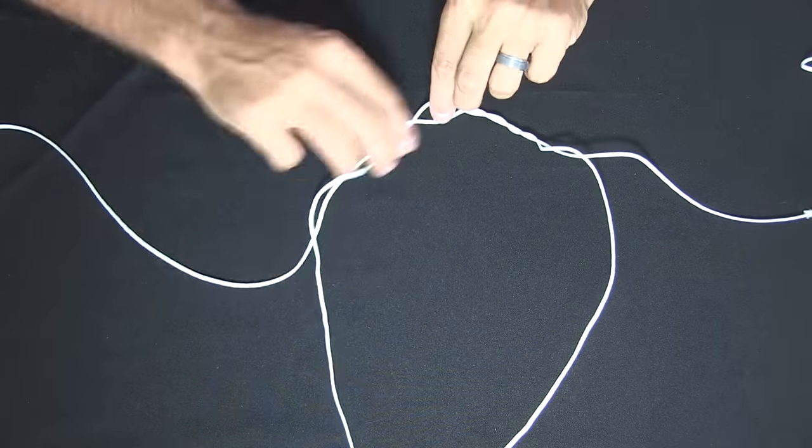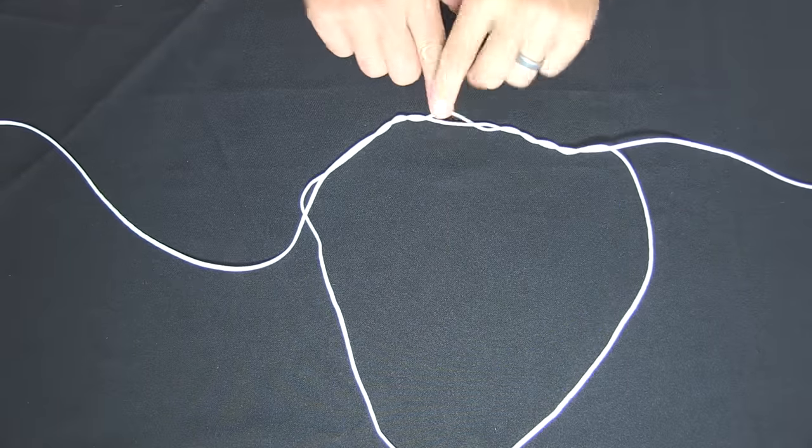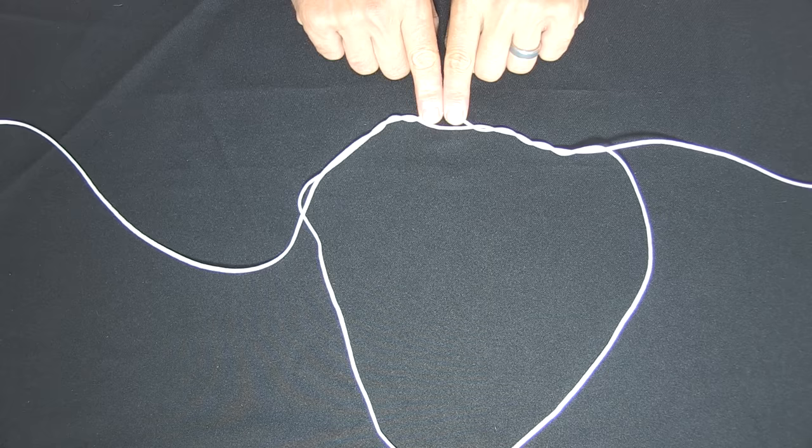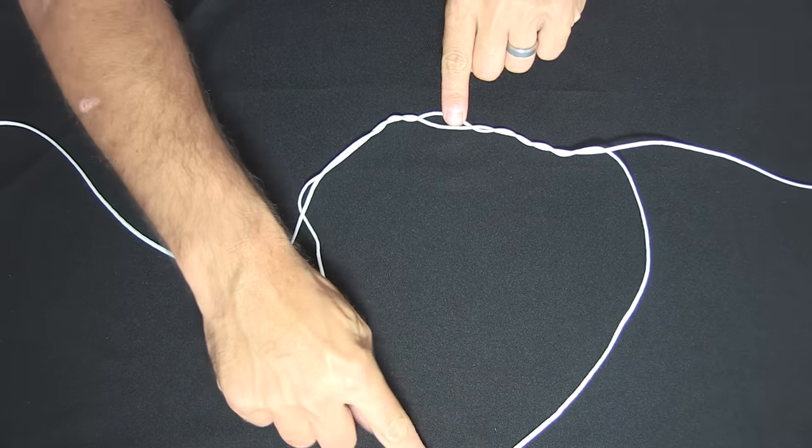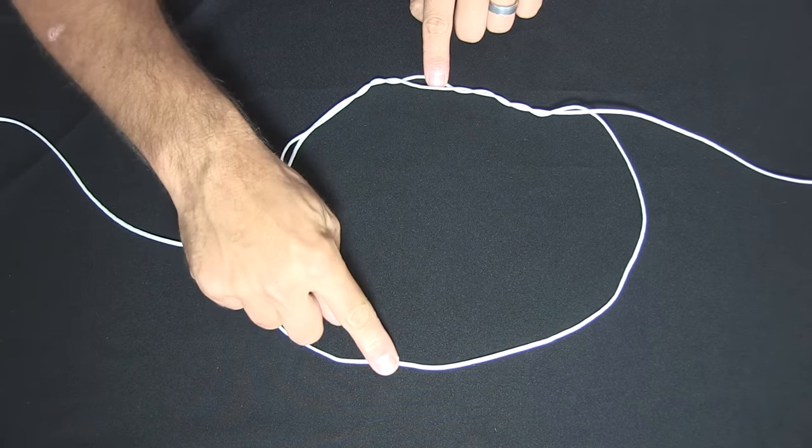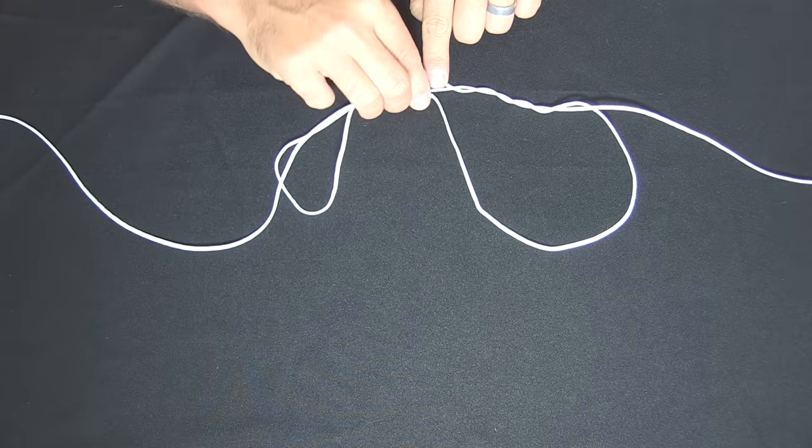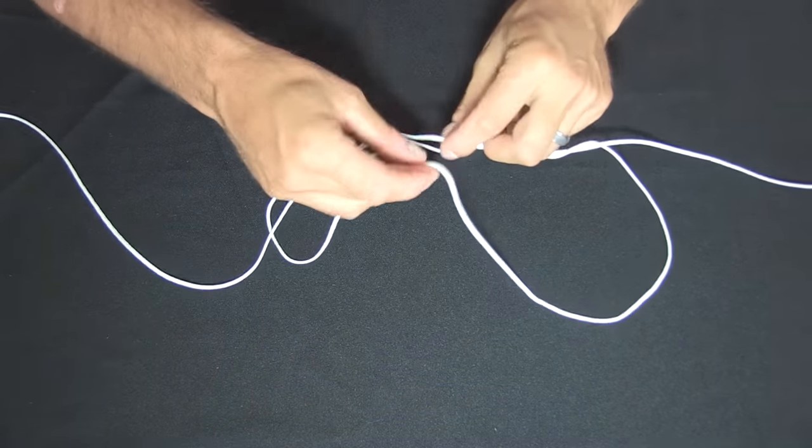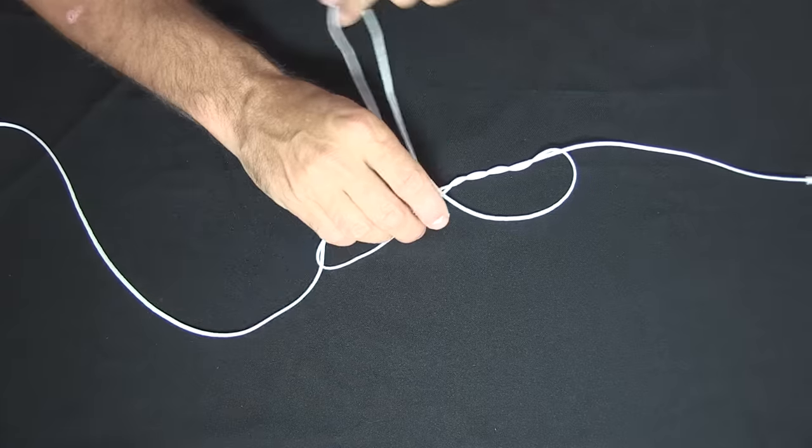And you'll see there we have a series of twists. We have a part and what we want to do is grab the end of this loop here and pass it up through the part that's in the line. Like so.